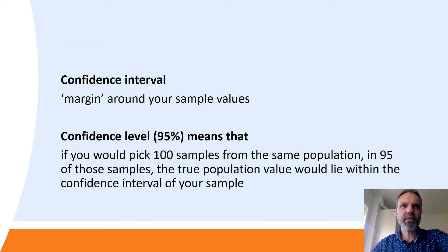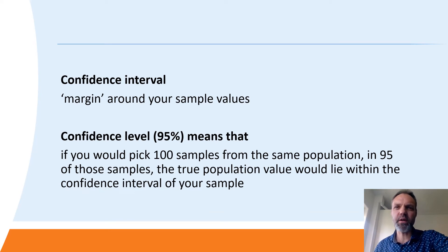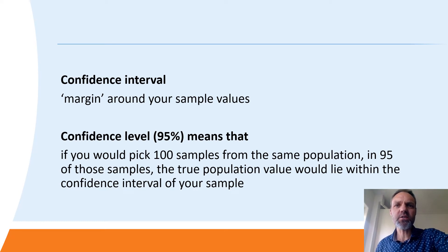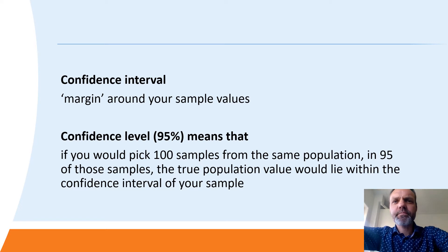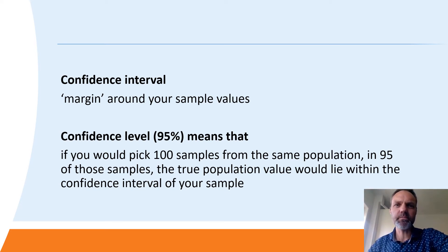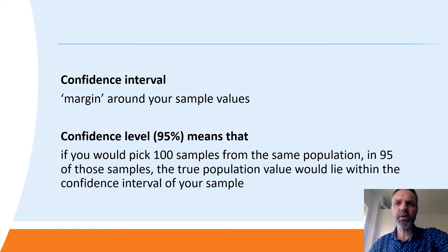Now we've seen in short what the confidence interval basically means. But even with this confidence interval in mind, there is still a chance that the true population mean value does not fall within this interval. So you also want to be sure that this chance is not very high, and this is where the confidence level comes in. You can say that you want to be confident to a certain degree that the true population value lies within the interval of your sample. This confidence level is usually set to 95%, and this means that if you would take not one sample from your population but 100, in 95 of these samples the true population value would indeed lie within your confidence interval.